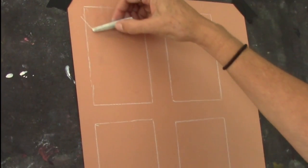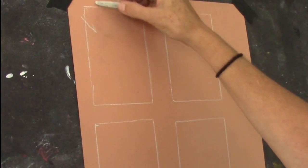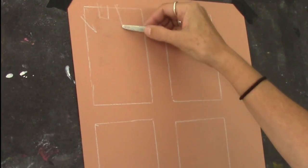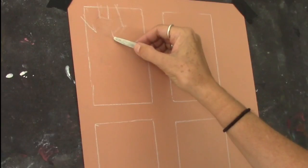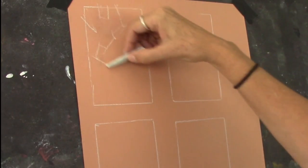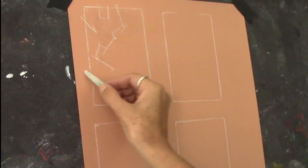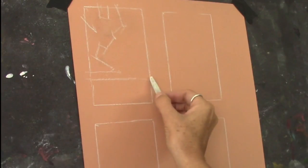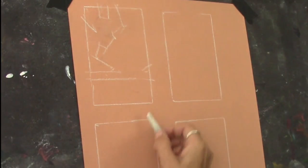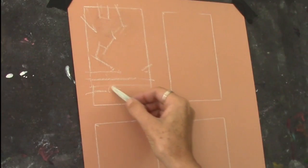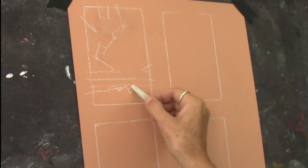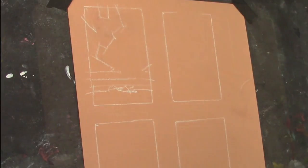First thing that we're going to do is we're going to establish the major cloud shapes. Just going to really lightly sketch them in. So we're planning for these. Really easy does it. And kind of come down here and say something about the land down here.